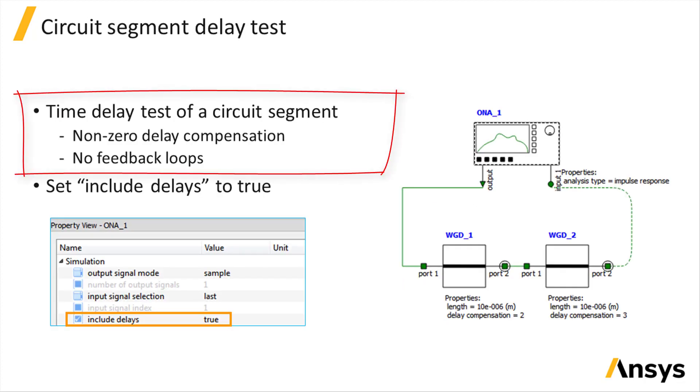If you want to test the delay of a segment of the circuit with non-zero delay compensation in the absence of feedback loops, then set the Include Delays property of the analyzer to True. This is a property of all optical analyzers.